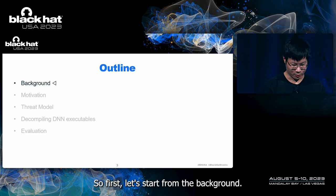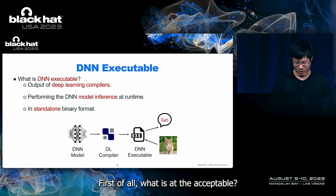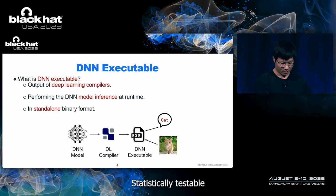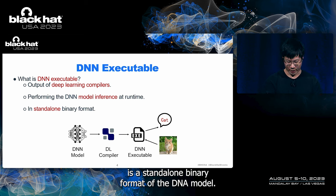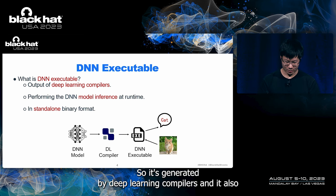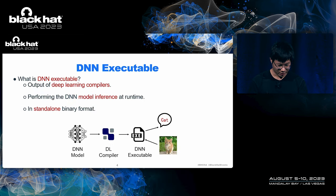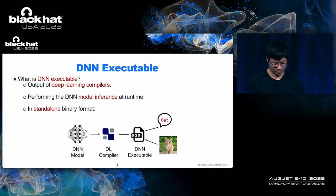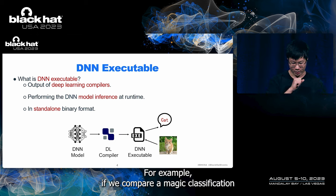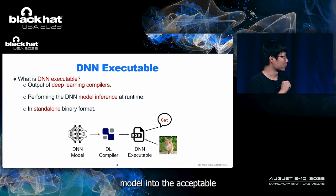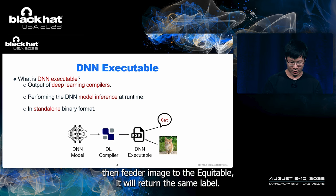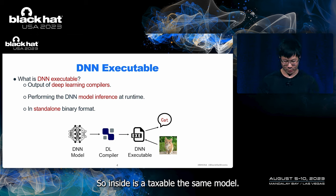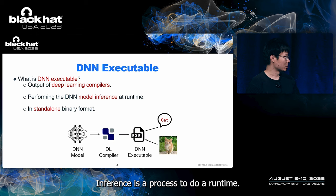Let's start from the background. What is the DN executable? DN executable is a standalone binary format of a DN model. It's generated by deep learning compilers and has exactly the same functionality as the original DN model. For example, if we compile an image classification model into the DN executable and feed an image to it, it will return the same label. Inside the DN executable, the same model inference is processed during runtime.